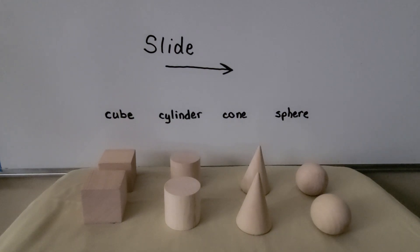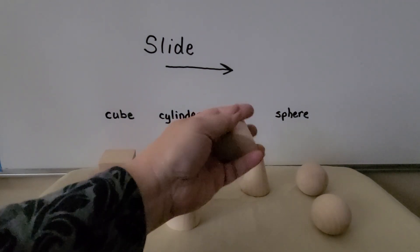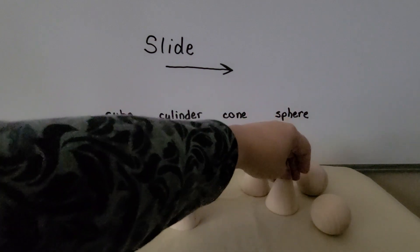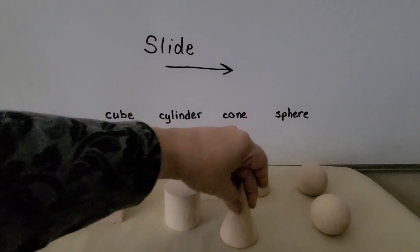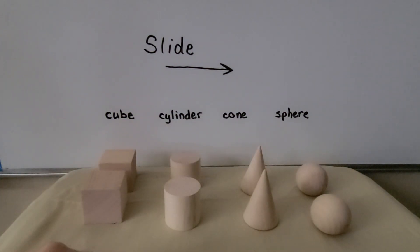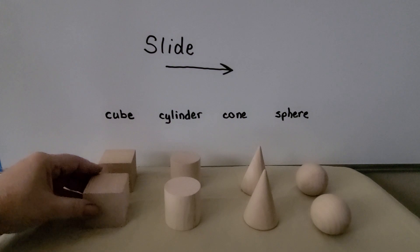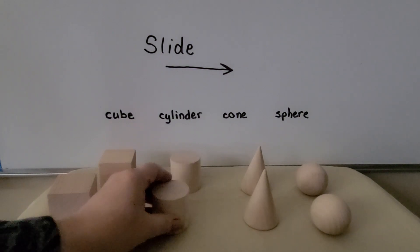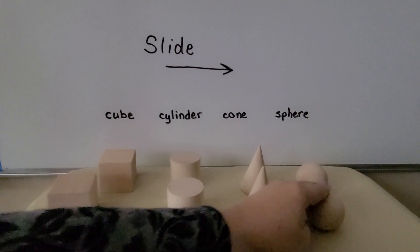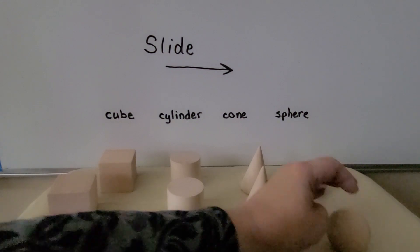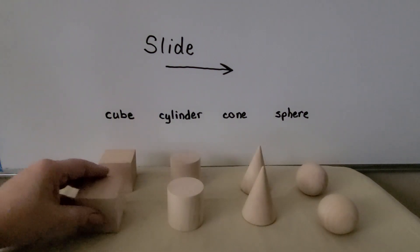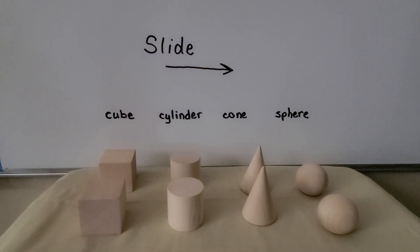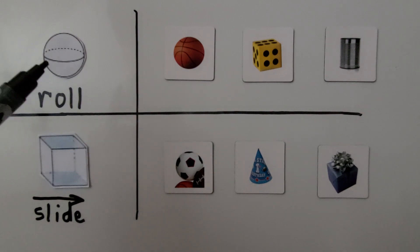If a shape has at least one flat surface, we can push it to make it slide — we can slide it on its flat surface. If it doesn't roll, it slides. We can slide a cube on a flat surface, slide a cylinder on a flat surface, and slide the cone. But a sphere doesn't have any flat surfaces, so we can't slide it — it rolls. So a cube, a cylinder, and a cone can slide because they have at least one flat surface.